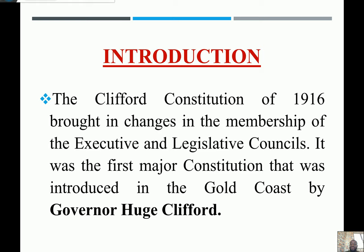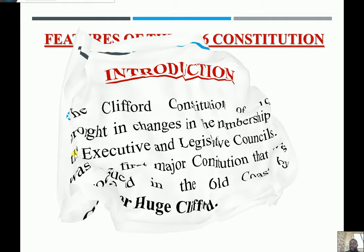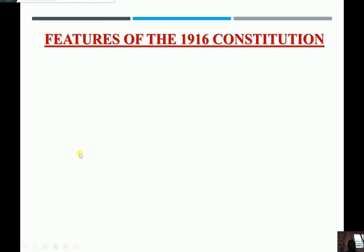The Clifford Constitution of 1916 brought in changes in the membership of the executive and the legislative councils, and it was the first major constitution introduced in the Gold Coast by Governor Hugh Clifford. Because of the agitations made by the educated elite, Hugh Clifford decided to make some changes to the membership of the executive and the legislative councils, so as to suit the aspirations of the educated elite. Let's look at what changes took place and how it was different from the 1903 constitution.